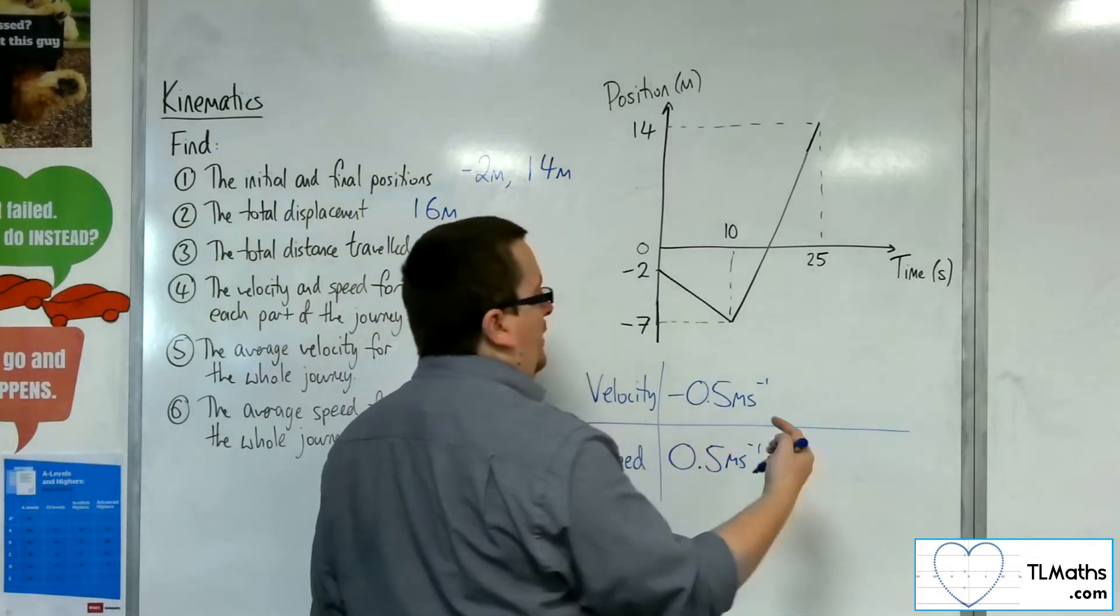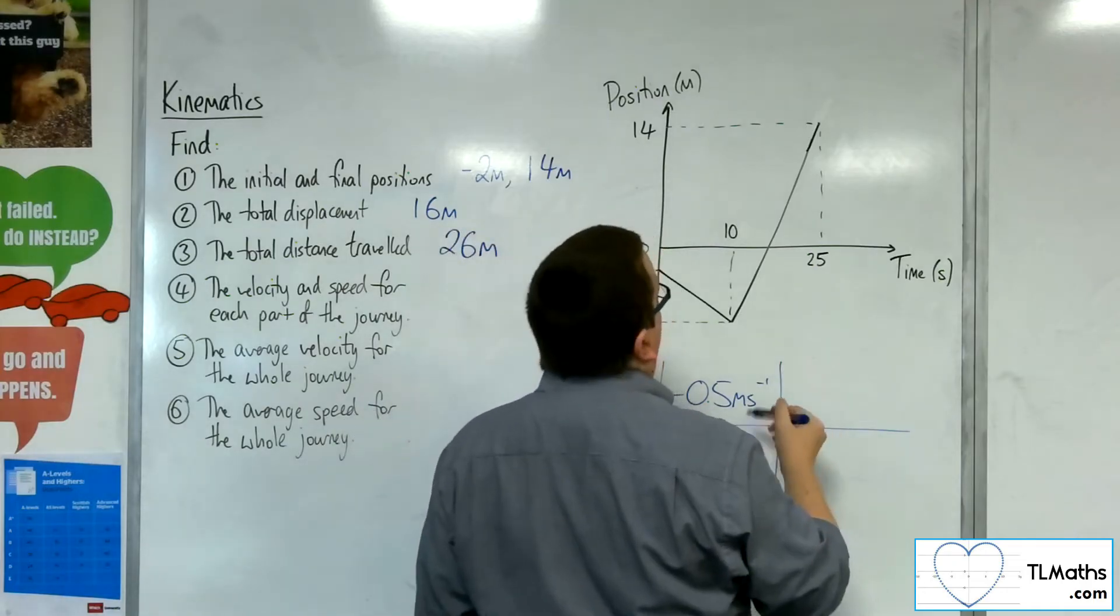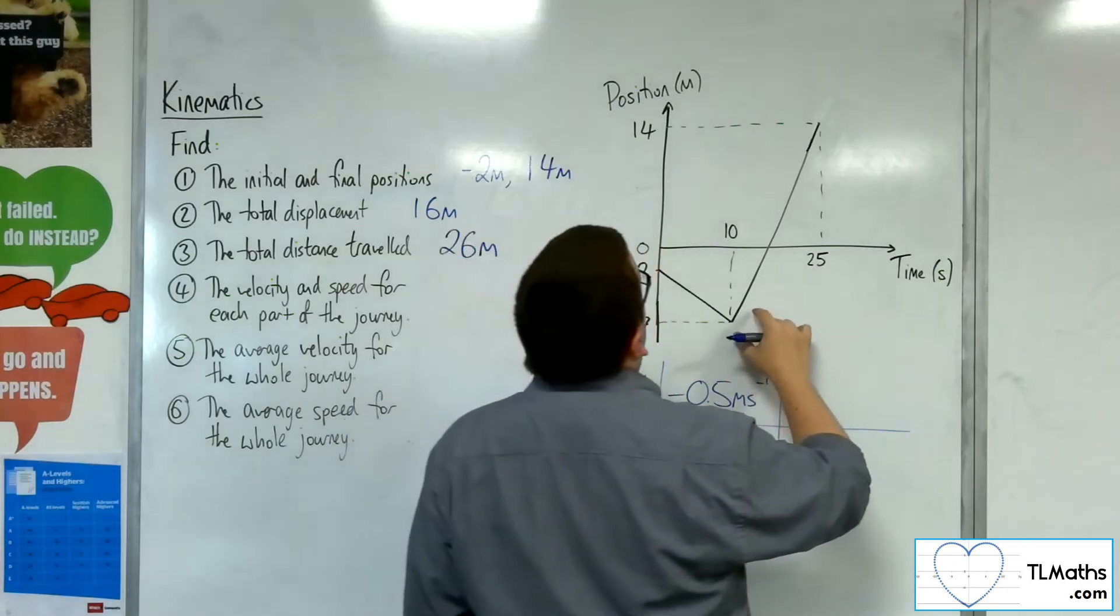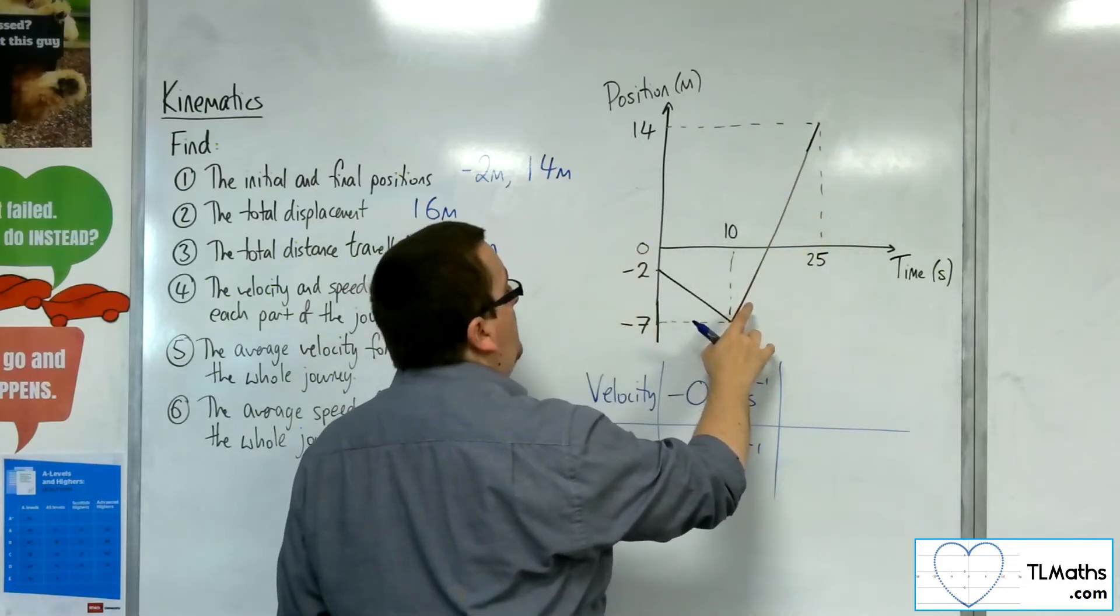The velocity, remember, includes the direction of travel. As for the second section, we are travelling—we've got 14 plus 7, so 21 metres,